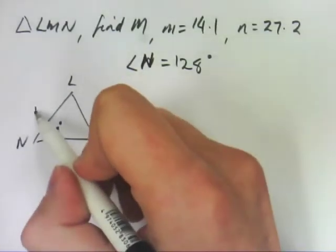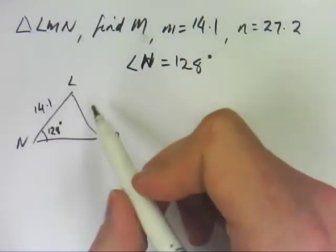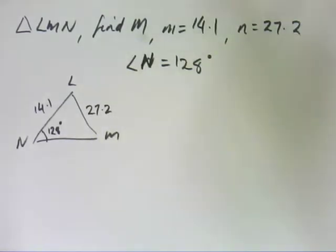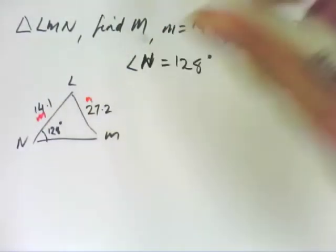Side M, which is over here, is 14.1, and side N is 27.2. So I'll label them for you. So that's M and that's N.